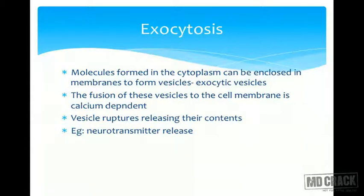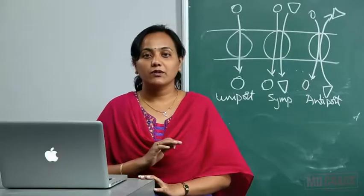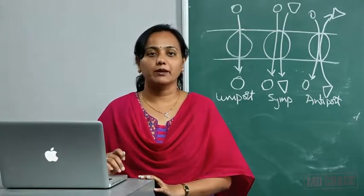Exocytosis is the way by which cells release macromolecules into the surroundings. Whatever is synthesized within the cell — like a protein or peptide — is formed in a vesicle, which fuses with the membrane and releases its contents outside. Examples include insulin release and neurotransmitter release. This is how different types of substances are transported across the cell membrane.